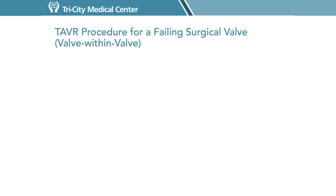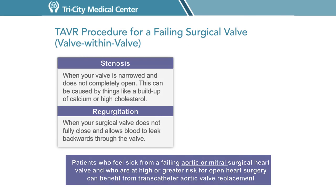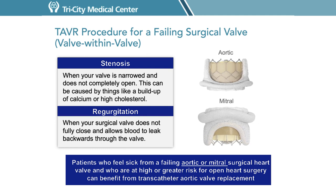Over time, a surgical heart valve can degrade — it can develop stenosis or regurgitation. Just like aortic stenosis, you have two options for replacement: surgical and transcatheter aortic valve replacement. Your heart team will help recommend what the right procedure is for you. A transcatheter aortic valve-in-valve replacement for your failing surgical valve follows the same procedural steps as a TAVR for aortic stenosis. The new valve will use the old surgical valve as the foundation and will push the old valve leaflets aside.